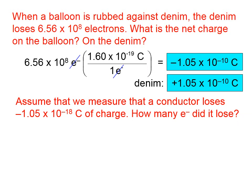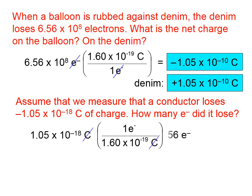Suppose you get a question like this. Assume that we measure that a conductor loses negative 1.05 times 10 to the negative 18th coulombs of charge. How many electrons did it lose? Well here, we're going to use the same equivalence statement, but the conversion factor will be upside down compared to what we had before, so that the coulomb units cancel.